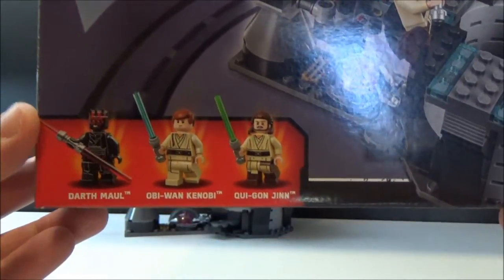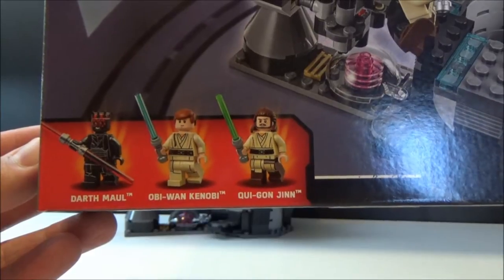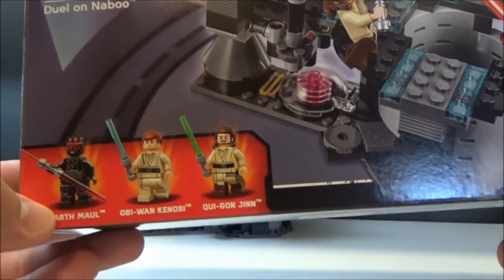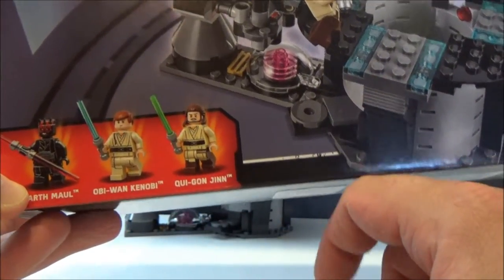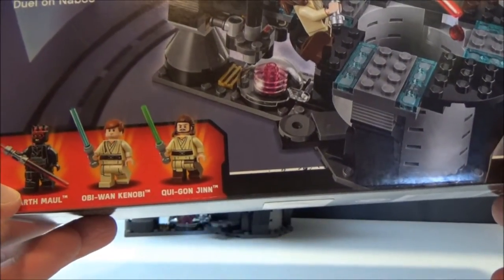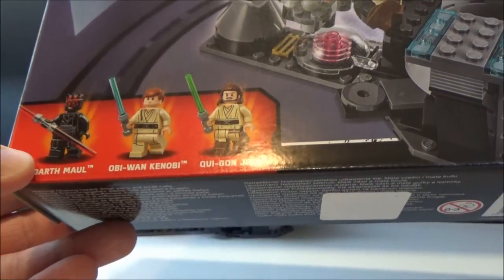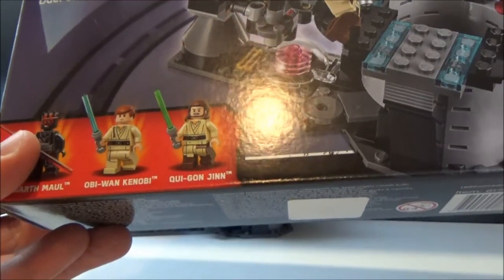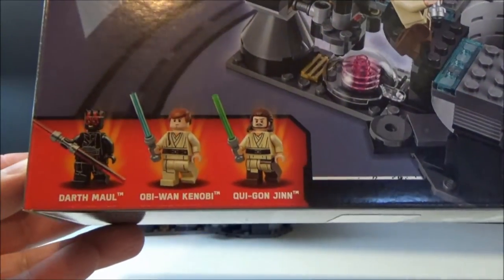It comes with three minifigures, probably the main reason why I got the set: Darth Maul, Obi-Wan Kenobi, and Qui-Gon Jinn. My first ever LEGO Star Wars set back in 1999 came with Darth Maul and Qui-Gon Jinn. I still have those minifigures, they are in rough shape, so it's very nice to finally have an upgrade.